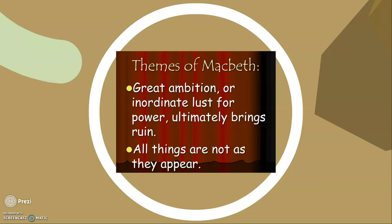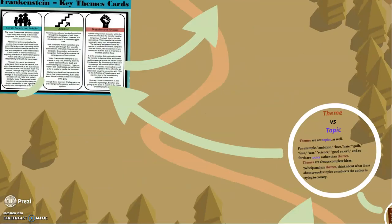Similarly, a couple of people put something like 'reality versus illusion' or 'reality versus perception' — that's again a topic, not a theme. But 'all things are not as they appear' — now we're getting to theme. Same thing with Frankenstein: isolation is not a theme, but 'the novel Frankenstein presents isolation from family and society as the worst imaginable fate, and the cause of hatred, violence, and revenge' — that's a theme. Those are important aspects to think about when you're looking at theme.